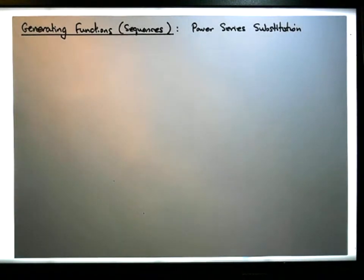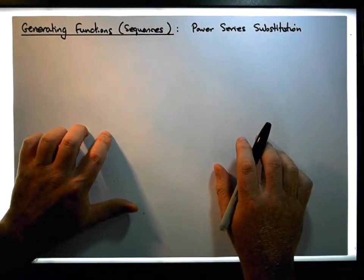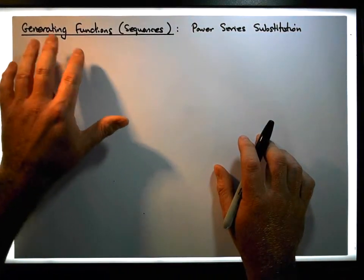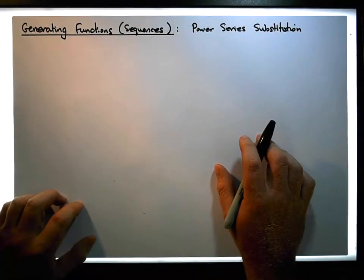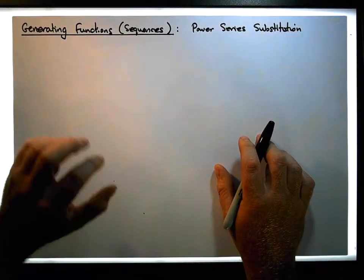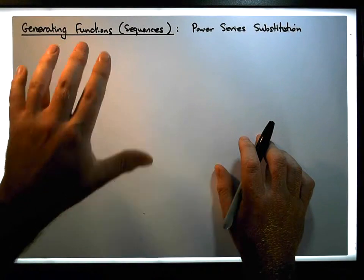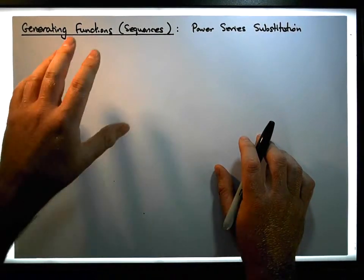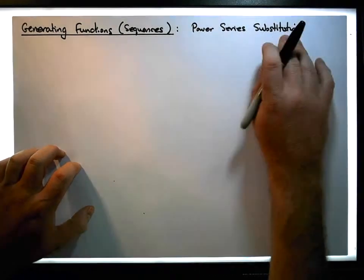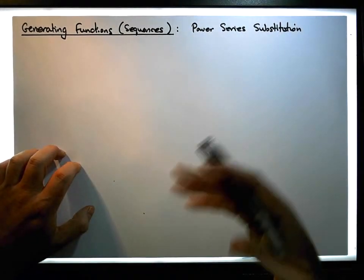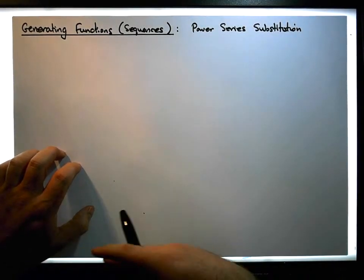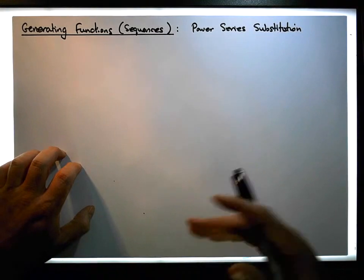Hi guys, this is Jonathan Lambert with Maths and Stats, and this video is another in our series dealing with generating functions associated with sequences. In particular, we're going to look at the effect of substitution — the changing of the x indeterminate within the power series — and the effect that has on the sequence, the power series, and the associated generating function.